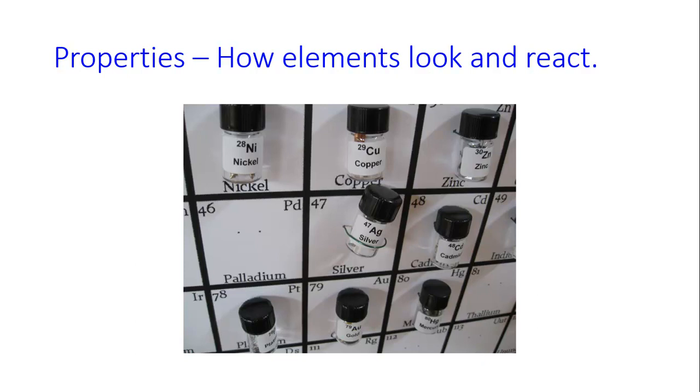We'll be looking at luster, which is the shininess of a metal. You can see at the bottom, under the word nickel, a screw that has more of a silver shininess to it. And when you look at the copper, you can see that the copper has more of a reddish luster or shininess to it.